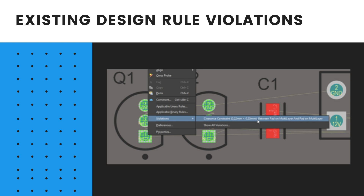If you find the violation markers distracting, you can clear them by running Tools, then click the Reset Error Markers command. This command only clears the marker — it does not hide or remove the actual error. The error will be flagged again the next time you perform an edit action that runs the online DRC, such as moving the component, or when you run the batch DRC.